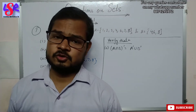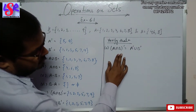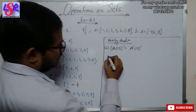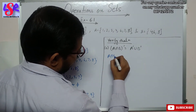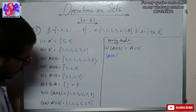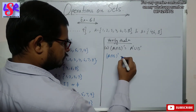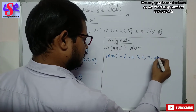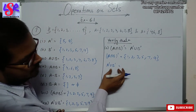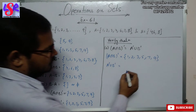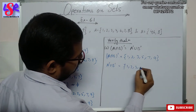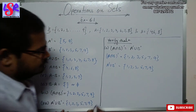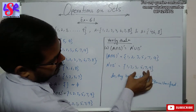Now we are moving to the verification portion. In the first part we verify that (A intersection B) complement equals A complement union B complement. A intersection B complement gives {1, 2, 3, 5, 7, 9}, and A complement union B complement also gives {1, 2, 3, 5, 7, 9}. As both sets have the same elements, hence verified.